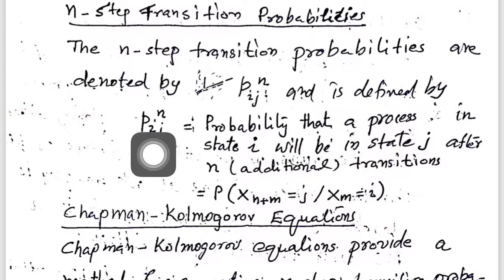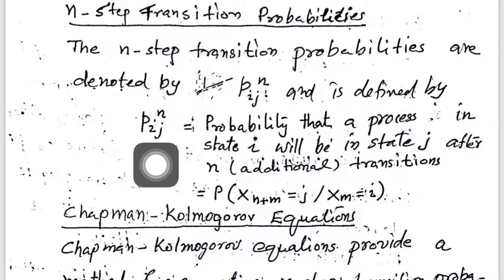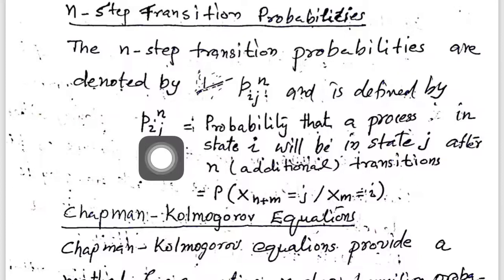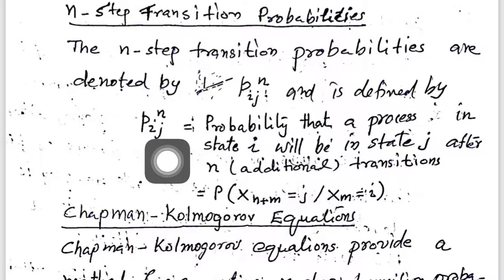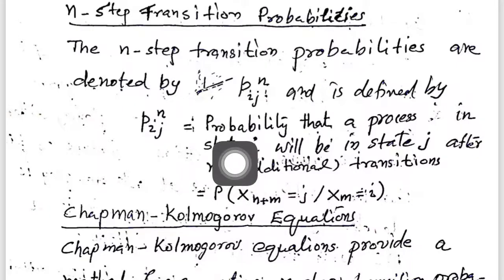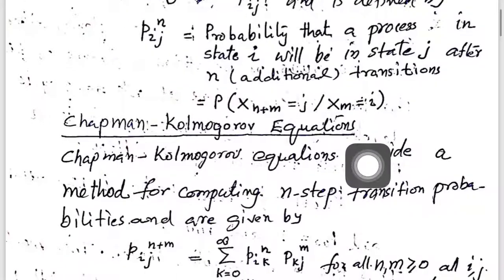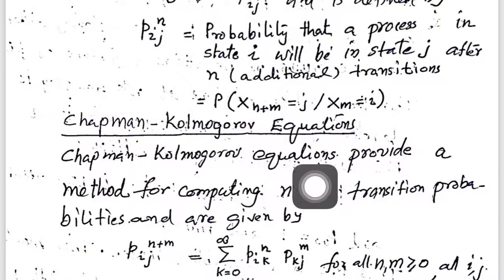Regarding n-step transition probabilities, we can find them in terms of lower-step probabilities. For example, two-step transition probabilities can be determined from one-step transition probabilities. Therefore, we can find higher-step transition probabilities using lower-step ones. To enable this, we require a set of equations called Chapman-Kolmogorov equations.